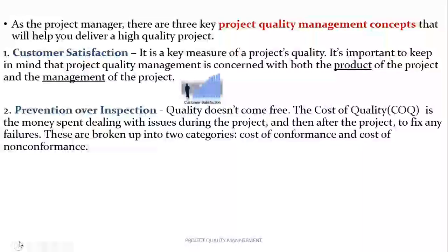Second is prevention over inspection. Quality doesn't come free. The cost of quality (COQ) is the money spent dealing with issues during the project and after the project to fix any failures. These are broken up into two categories: cost of conformance and cost of non-conformance. Cost of conformance includes preventive cost, and cost of non-conformance includes internal failure cost. So quality is achieved by planning, designing and building it into a product or processes from the inception.